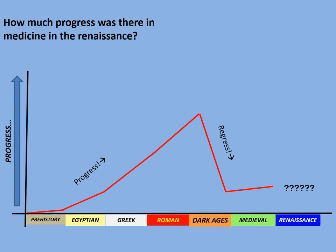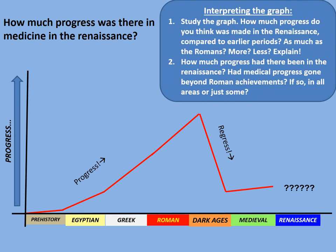If the line carries on in the same way, that shows lots of continuity. If there's steep progress, that shows a lot of change for the better. Your task: how much progress do you think was made in the Renaissance compared to earlier periods — as much as the Romans, more, or less? Also consider: had medical progress gone beyond Roman achievements, and if so, in all areas or just some? Pause the video and answer those questions in relation to the graph.